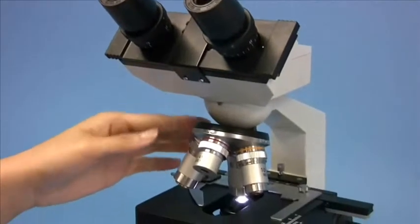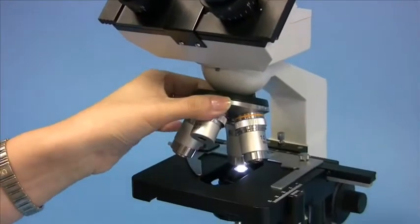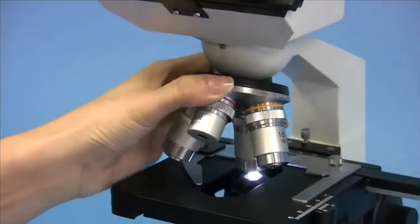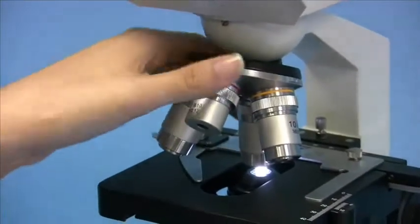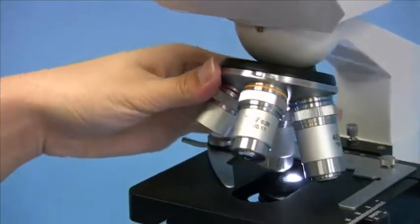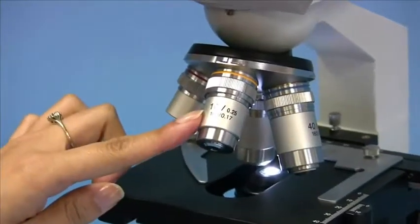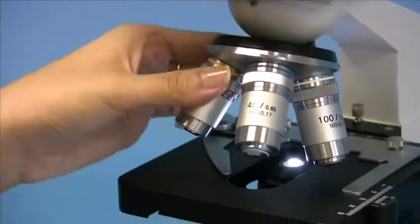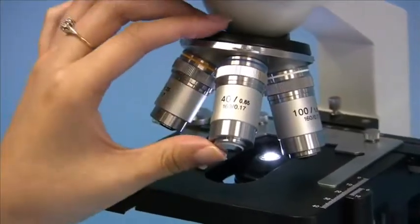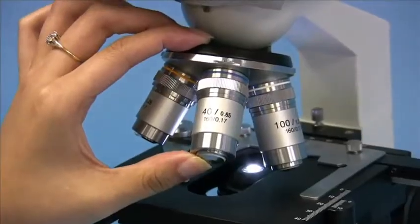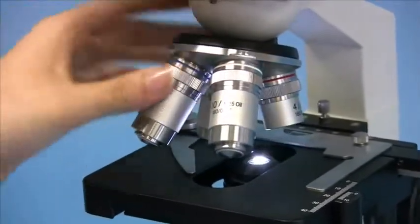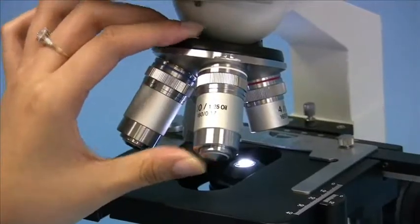Moving down to the nosepiece, the revolving nosepiece is mounted by four objective lenses. The 4 times magnification, the 10 times, the 40 times spring-loaded, and the 100 times spring-loaded oil objective.